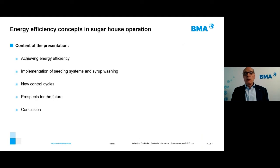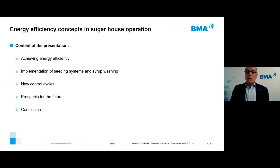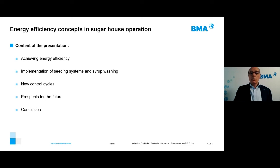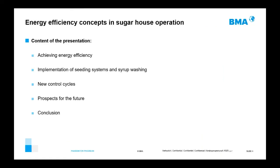Now let's have a short look at what I'd like to present today. It's about achieving energy efficiency, with some examples from current operations. Then I'd like to go back to the implementation of seeding systems and syrup washing measures for sugar house operation and optimized operation. Then some words on new control cycles, and finally some prospects for the future and conclusions.